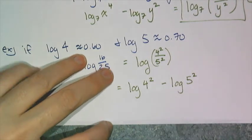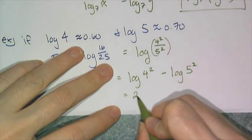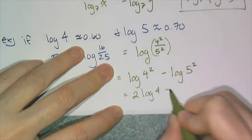And so now we can look at our log laws and realize, oh hey, I have a quotient so I can use the quotient rule and subtract. And then oh hey, I have the power rule so I can rewrite it like this.